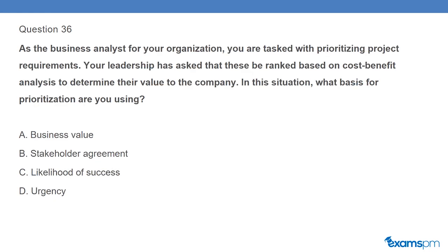Question 36: As the business analyst for your organization, you are tasked with prioritizing project requirements. Your leadership has asked that these be ranked based on cost-benefit analysis to determine their value to the company. In this situation, what basis for prioritization are you using? A. Business value. B. Stakeholder agreement. C. Likelihood of success. D. Urgency.